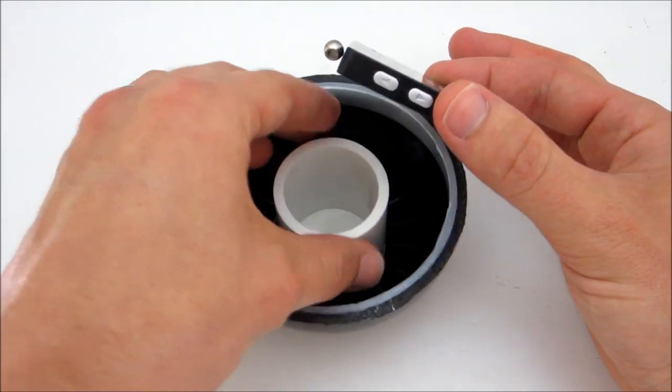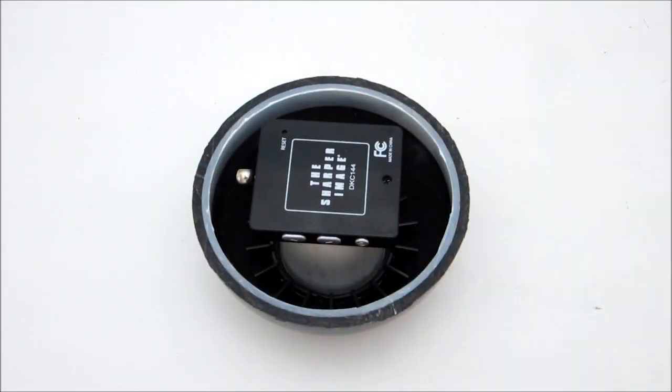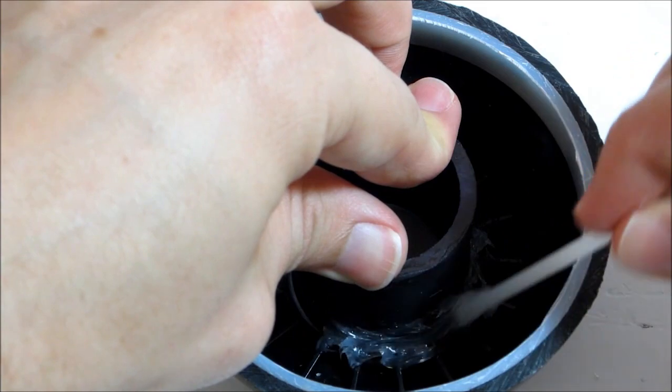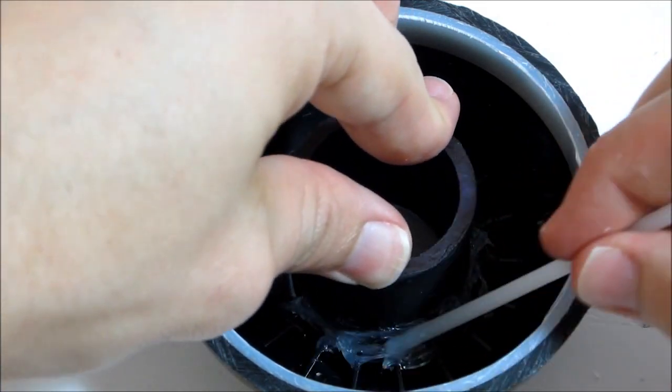Next, cut a piece of PVC pipe to be the same length as the bottom half of the Magic 8-Ball, about 1 and 3 quarter inches. I also decided to paint the pipe black to match the color of the 8-Ball. Then set the pipe on the clear plastic disc that you just installed and glue it in place with clear adhesive.